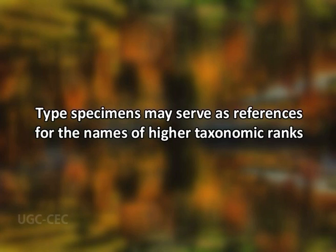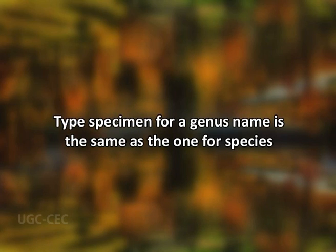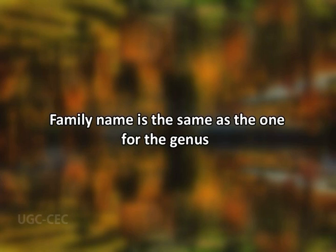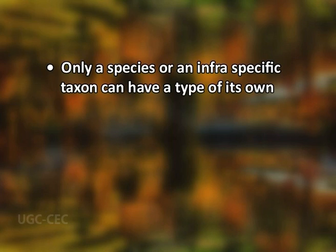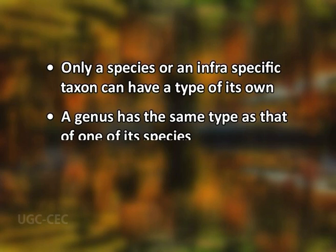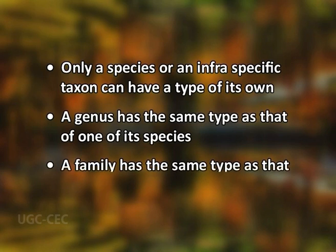Normally, we think of types as referring to names of species or infraspecific taxa. However, type specimens may serve as reference for the names of higher taxonomic ranks as well. For example, the type specimen for a genus name is the same as one of the species within that genus that was published first. The type specimen for a family name is the same as the one for the genus within the family that was published first. The International Code of Botanical Nomenclature has devised certain guidelines: only a species or an infraspecific taxon can have a type of its own; a genus has the same type as that of one of its species; and a family has the same type as that of one of its genera.